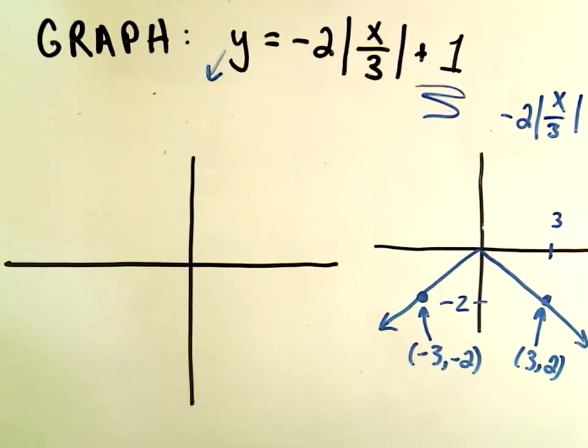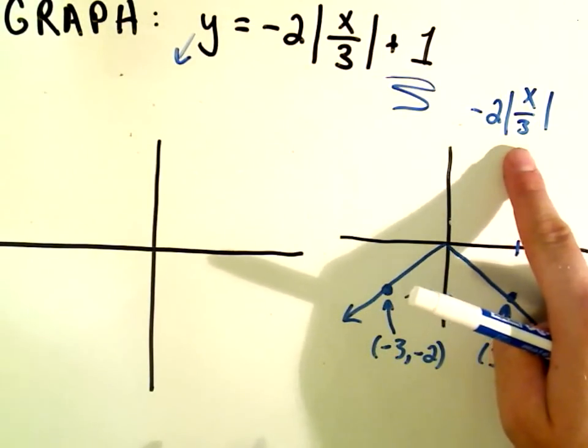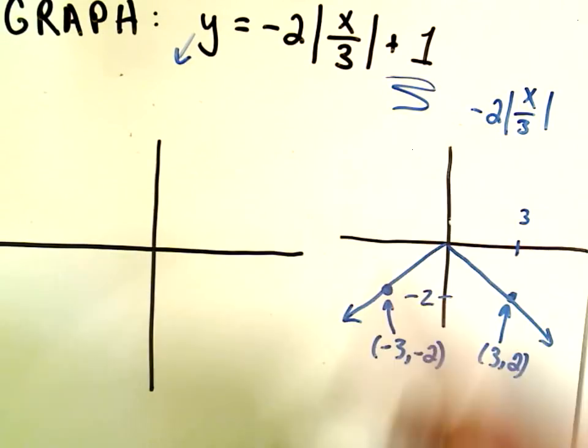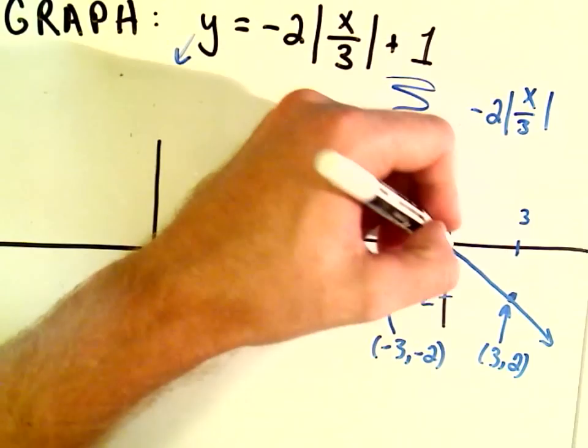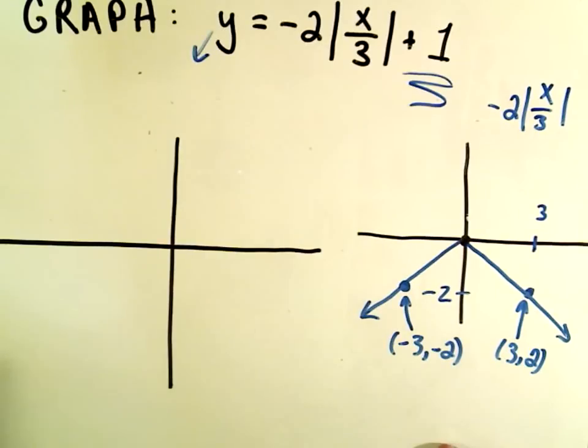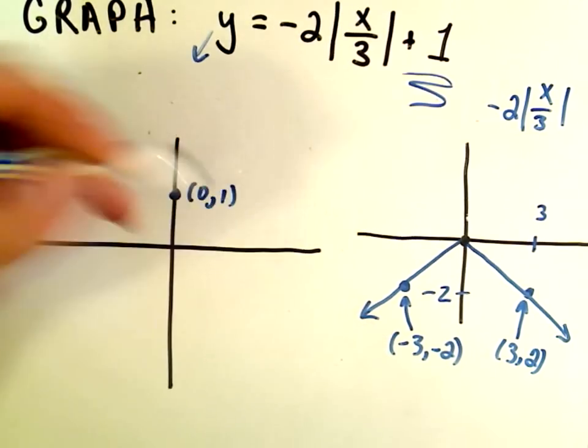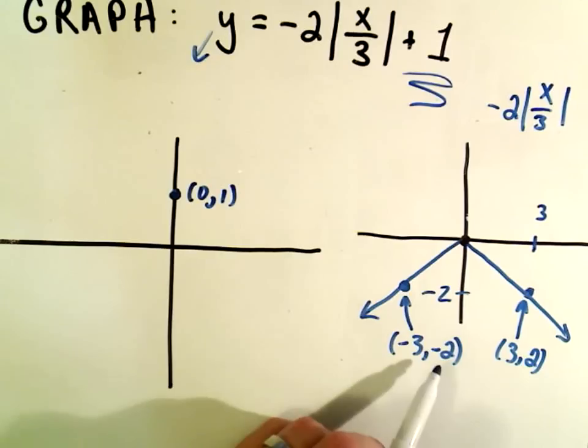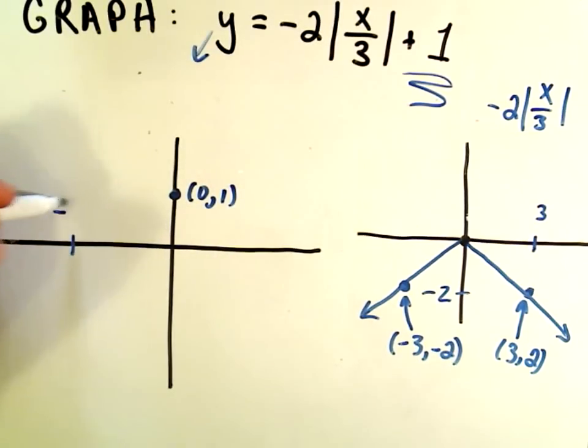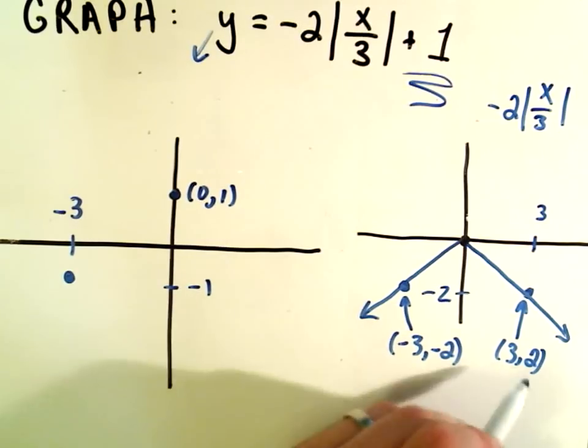Remember, if you throw on a plus 1, that simply has the effect of moving your graph up one unit. We'll do the final graph of negative 2 times the absolute value of x over 3 plus 1. All the plus 1, all that's going to do, it's going to take this original graph we have here and simply move it up one unit. The top of the function was there at 0, 0. So if you move that up one unit, that's simply going to be sitting at the point 0 comma 1.